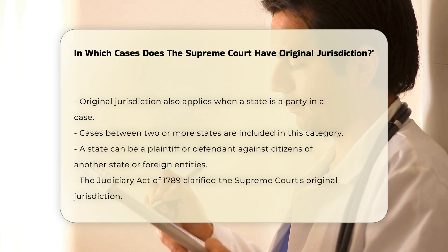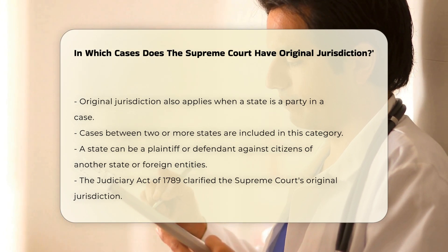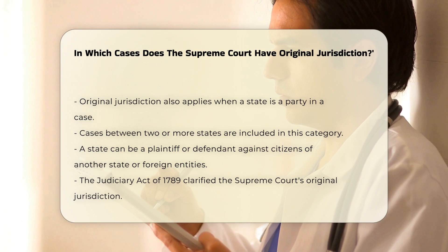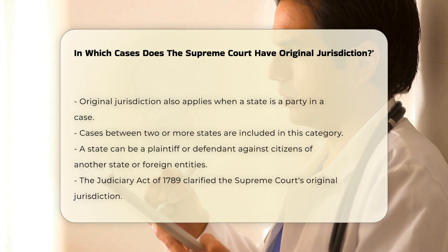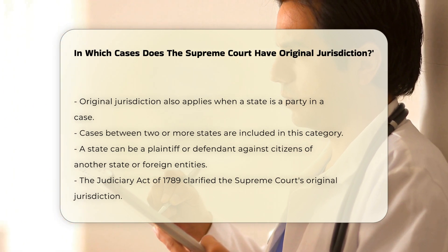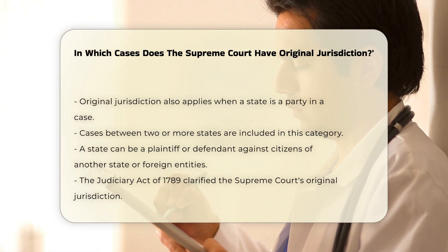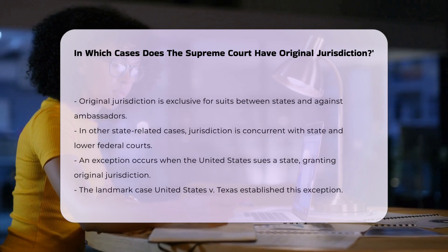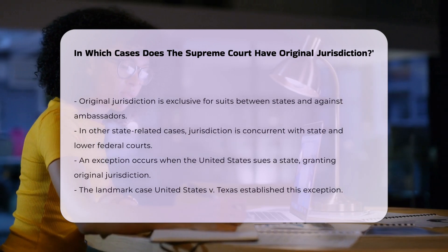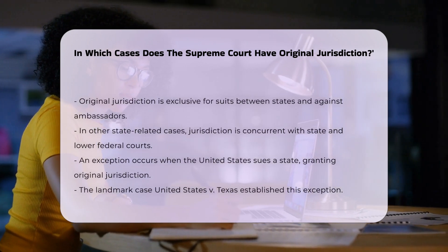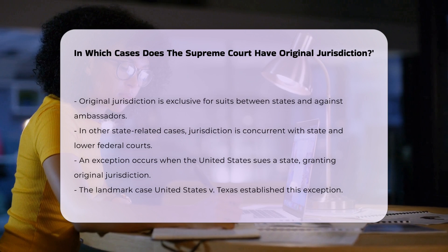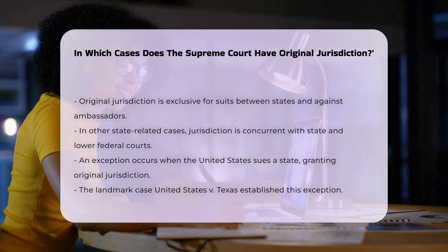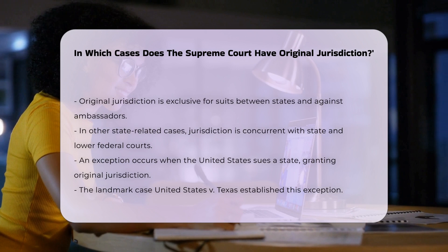The Judiciary Act of 1789 further clarified the Supreme Court's original jurisdiction, making it exclusive in suits between two or more states, and in suits against ambassadors and other public ministers. However, in other cases where a state is a party, the jurisdiction is concurrent with state courts or lower federal courts.